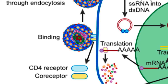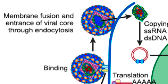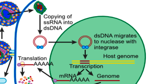HIV binds to the CD4 receptor and a co-receptor, which is a chemokine co-receptor, for entry — so it has to bind to two proteins to enter. After uncoating at the membrane surface, the viral core is placed into the cytoplasm. The viral RNA is then copied into DNA by its RNA-dependent DNA polymerase, a reverse transcriptase. This copied DNA then moves to the nucleus where the integrase integrates it into the host genome.